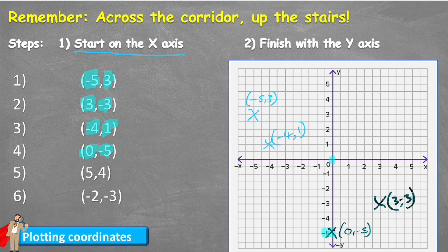Okay, number 5. Number 5 has two positive values, so I think we're going to be using this first quadrant, and we have on the X axis a 5 and on the Y axis a 4. Draw lines to connect them.